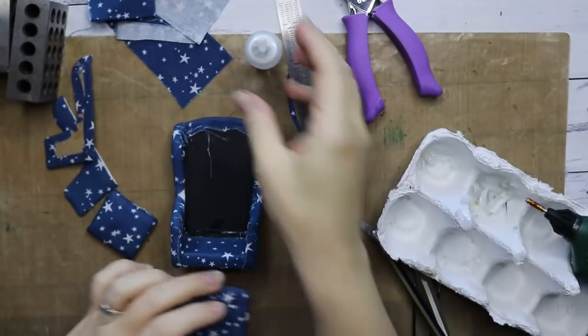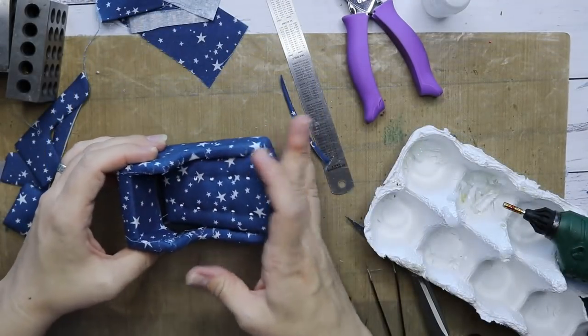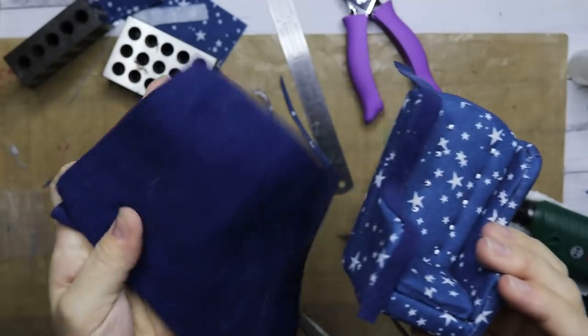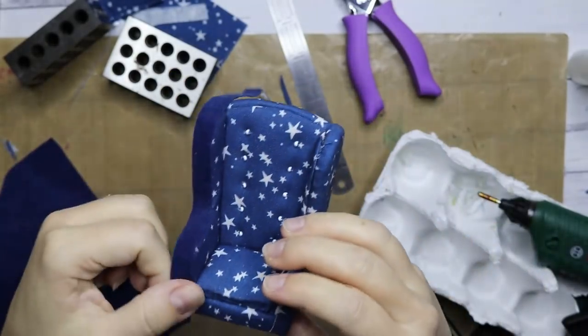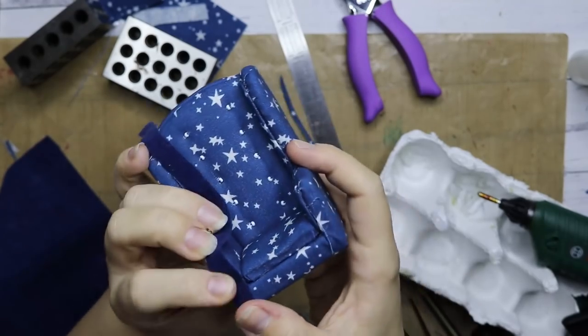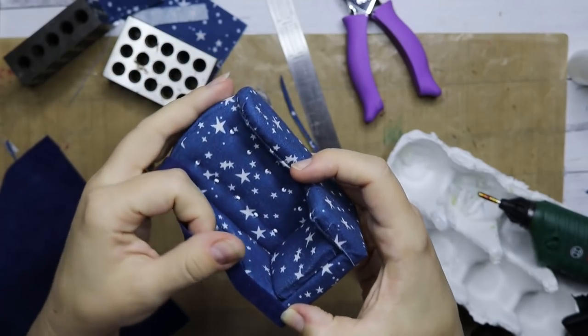Because this blue fabric is a non-fraying fabric, I'm just going to cut a strip and glue it at the front here like so.